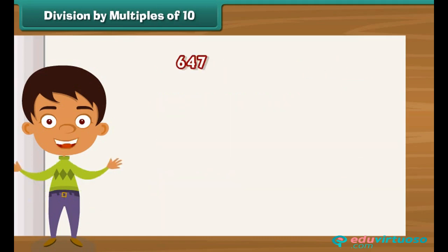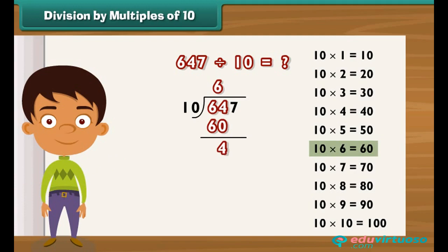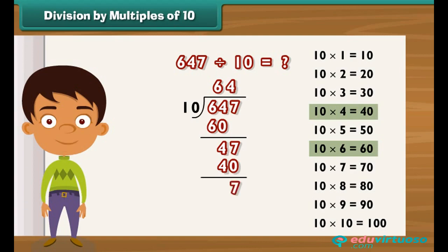Now, divide 647 by 10. We recall the 10's table and find a number such that when multiplied by 10 it lies close to 64. 10 into 6 is equal to 60. Subtract 60 from 64 to get 4. Bring 7 down — we have 47. 10 into 4 is equal to 40. Subtract 40 from 47 to get 7. So, the remainder is 7. Therefore, 647 divided by 10 leaves a remainder of 7.